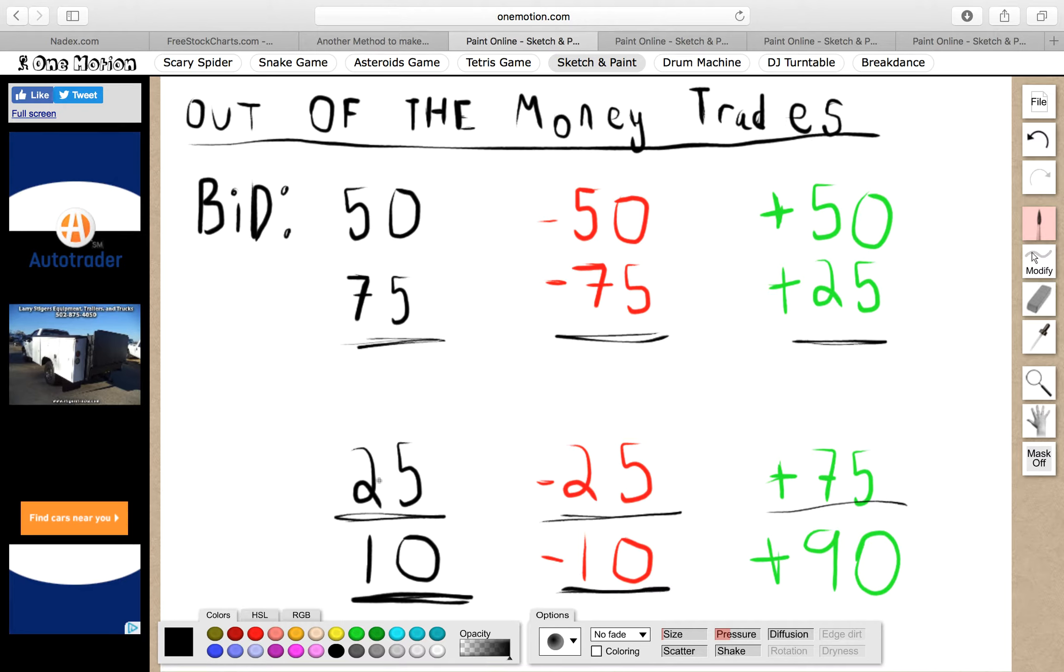And generally when I place these type of trades, when I place the out of the money trades I always wait for the expiration time. Because even if I place a take profit, I don't believe in take profit orders for these type of trades because you're only risking a very small portion of your account.